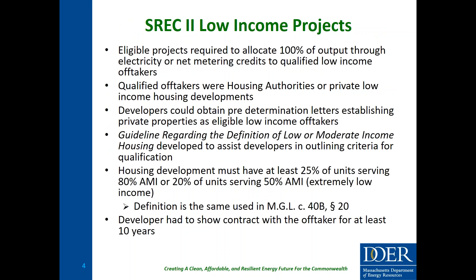Under SREC 2, projects eligible for Market Sector A as low-income projects were required to allocate 100% of output through electricity or net metering credits to qualified low-income off-takers. We are not actually doing the income verification ourselves — we're verifying that properties meet the eligibility requirements we set forth. They either had to be established housing authorities or private low-income housing developments providing documentation showing they met the affordability criteria. Properties could obtain predetermination letters establishing eligibility as low-income off-takers. To provide more information to the market, we developed a guideline regarding the definition of low- or moderate-income housing.